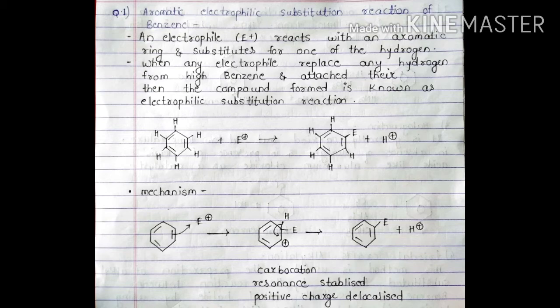Now we will see its mechanism. In this mechanism, benzene donates two pi electrons to A plus. Then for some time, the stability, that means aromaticity, was disturbed. Then it again takes two electrons and completes aromaticity. The positive charge is a carbocation which is resonance stabilized and the positive charge is delocalized.